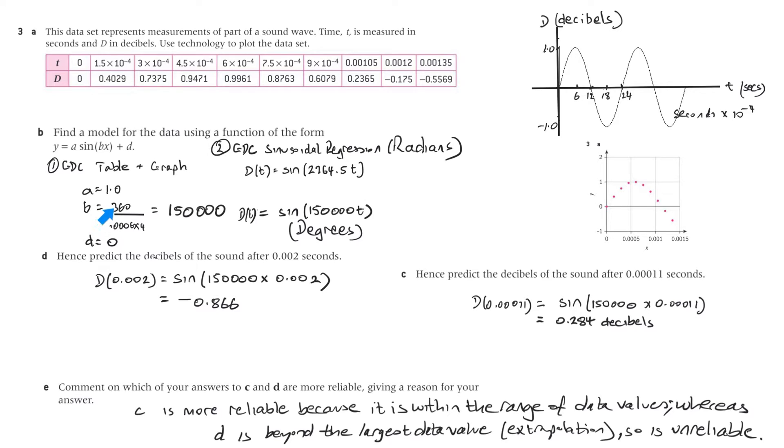And then I got 360 divided by what I believe is the period. So the period is 0.0006 times 4. It's from there to there, so that's one of those, 2, 3, 4, so it's times 4, and I got 150,000. And because there's no vertical shift, I've got d equals 0. So that became sine, because a is 1, so it's sine 150,000 t.